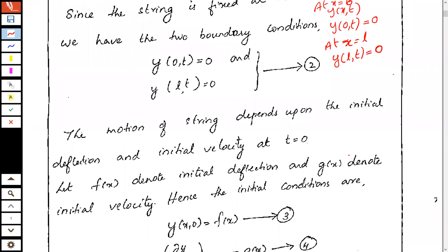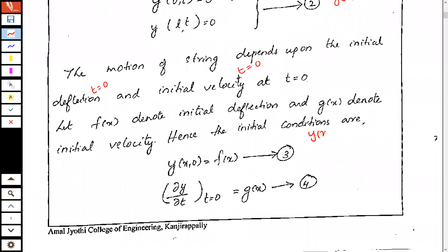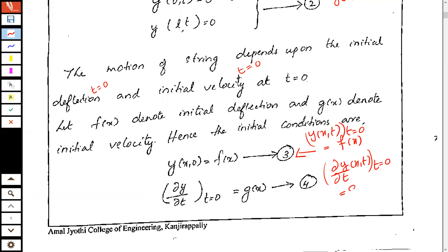The motion of the string depends on both the initial deflection and the initial velocity. The initial deflection is measured at t=0, and the initial velocity is also measured at t=0. When we evaluate y(x,t) at t=0, it becomes purely a function of x, which we label as f(x). If we differentiate y(x,t) with respect to t and evaluate at t=0, we get another function of x alone, denoted g(x).